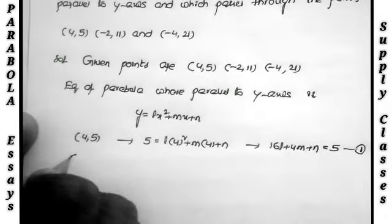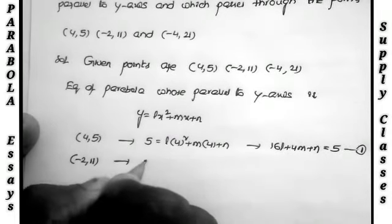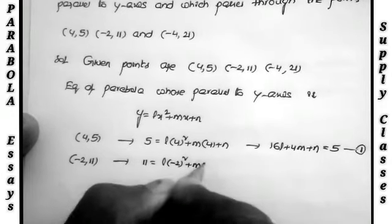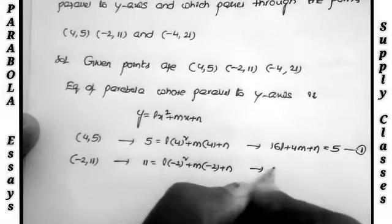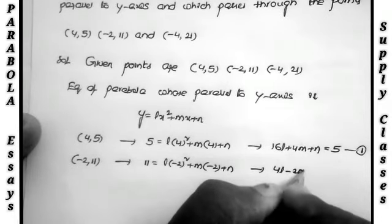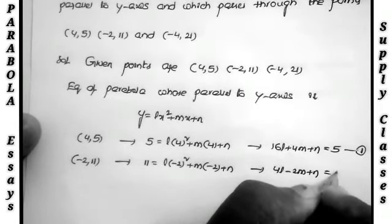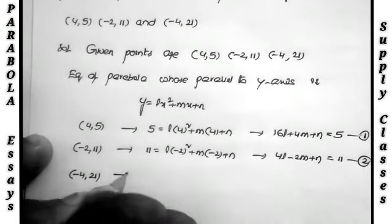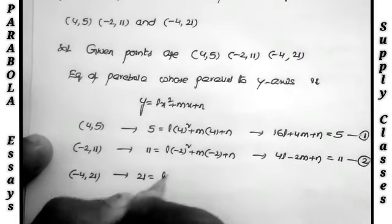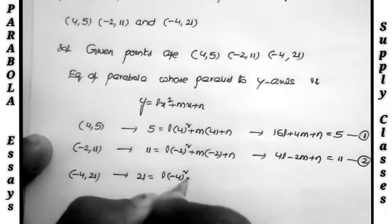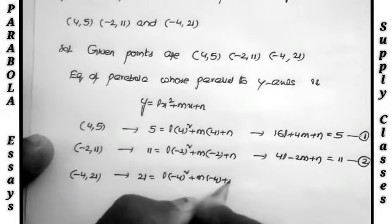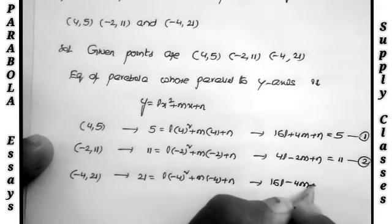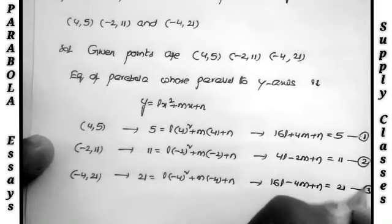Substituting the second point (−2, 11): l(−2)² + m(−2) + n = 11, giving equation 2: 4l − 2m + n = 11. Substituting the third point (−4, 21): l(−4)² + m(−4) + n = 21, giving equation 3: 16l − 4m + n = 21. These are the three equations to solve.